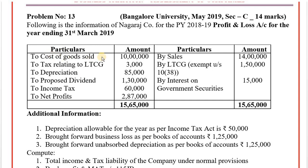Starting with the debit side — decide whether each item is allowed or disallowed. Cost of goods sold: allowed, ignore. Tax relating to long-term capital gain: add back. Depreciation: add back. Adjustment number 1 — depreciation allowable as per Income Tax Act is Rs. 50,000; as per books it is Rs. 85,000, so Companies Act figure is added back and Income Tax figure is deducted. Proposed dividend is an appropriation of profit — disallowed, add back. Income tax: disallowed, add back. Then consider net profit.